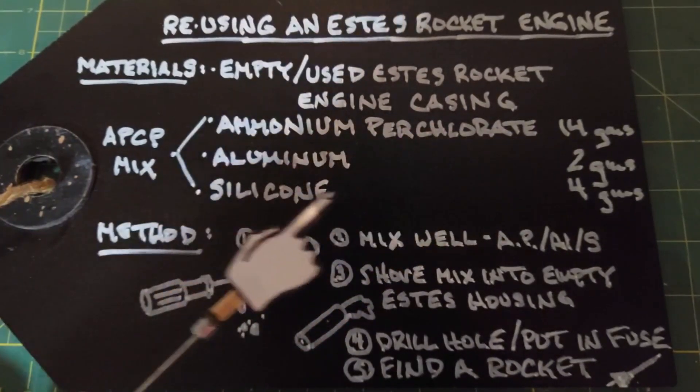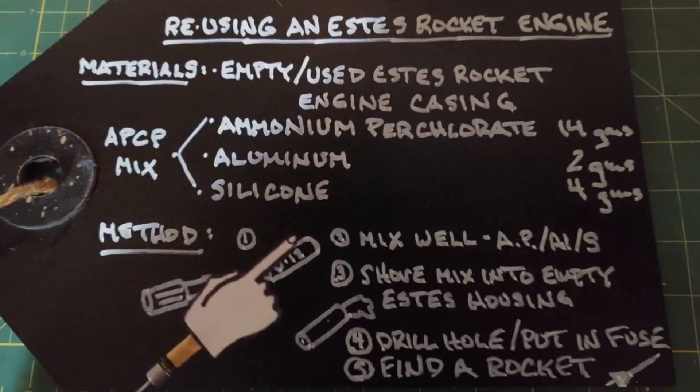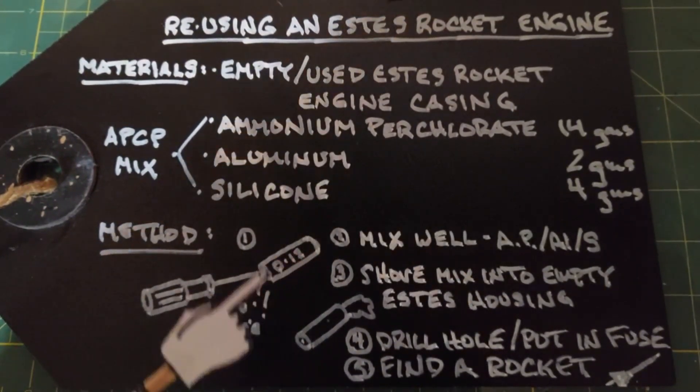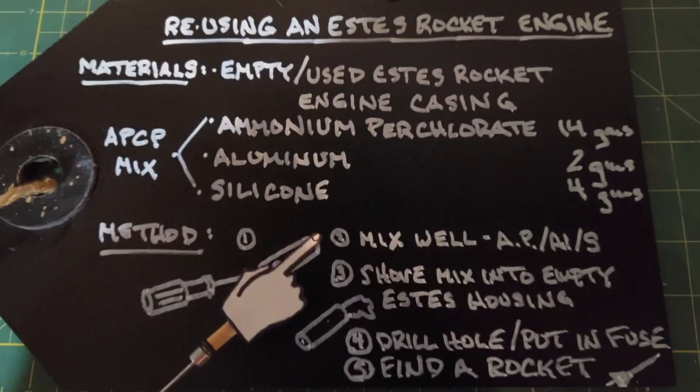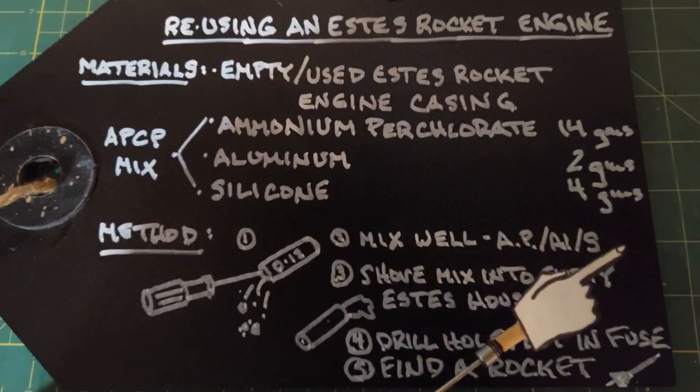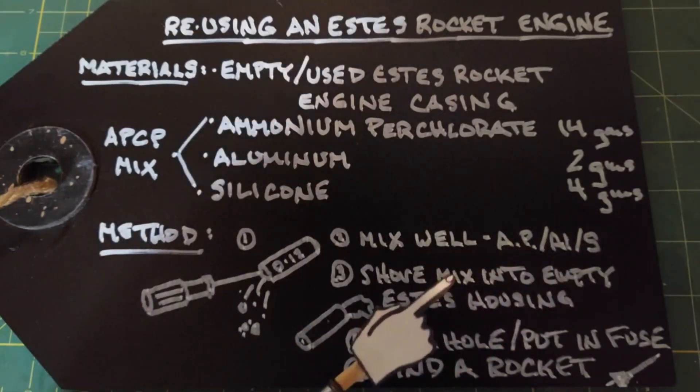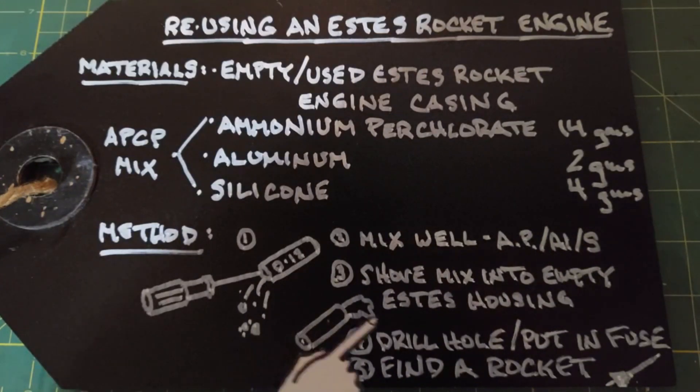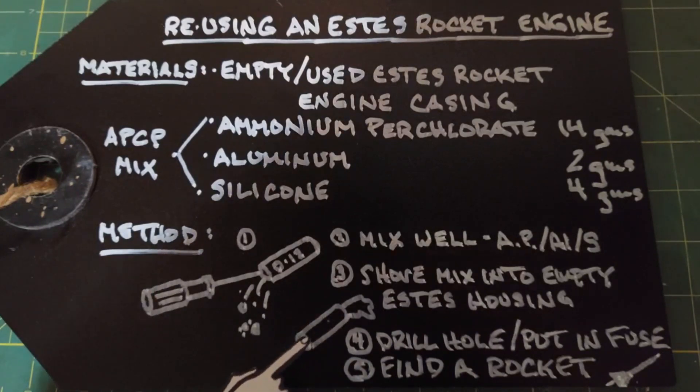For our method we're going to scrape out all the crap and crud that's stuck inside the rocket engine to clean it out good except for the nozzle. Then we're going to mix all these ingredients really well and it forms sort of a putty. We're going to shove that mix into the open end of the Estes rocket, once again leaving the nozzle like it is, and then drill a hole through the rocket engine like we need to do for these types of rocket engines.